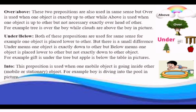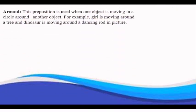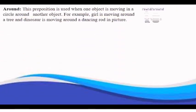Around is used when one object is moving in a circle around another object. For example, girl is moving around a tree and dinosaur is moving around a dancing rod, in picture.